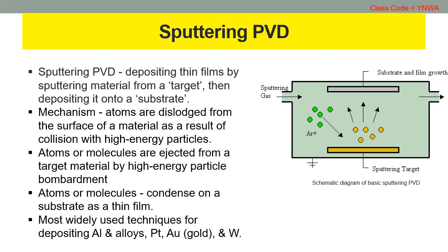Sputtering has become one of the most widely used techniques for depositing various metallic films on wafers, including aluminum, aluminum alloys, platinum, gold, and tungsten.